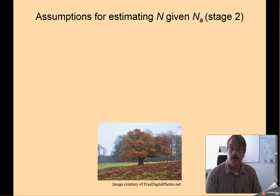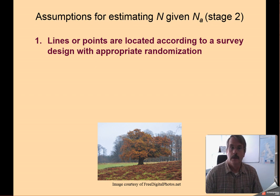Now we have some assumptions associated with method 2. Now that we have n sub a, how do we get n out of that? So in most cases we're going to use something called design-based inference. And design-based inference requires the assumption that where we have sampled is representative of or similar to where we didn't sample.